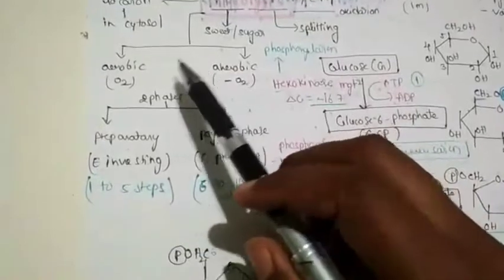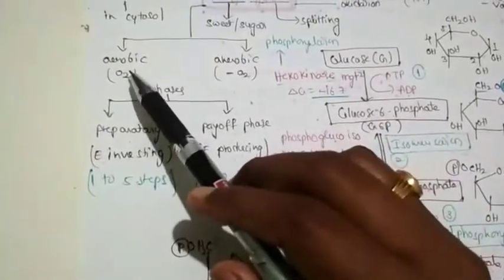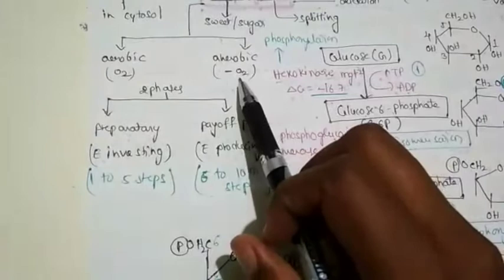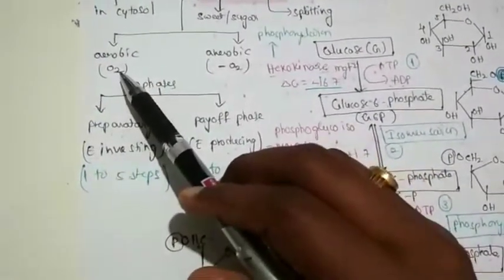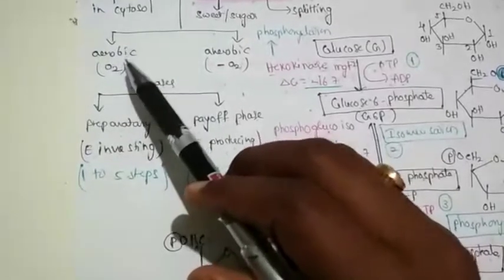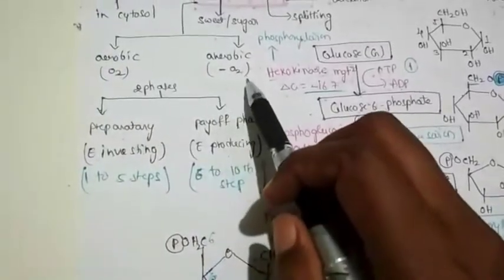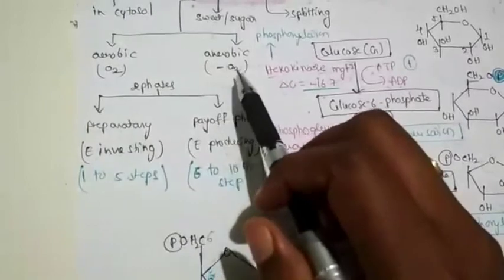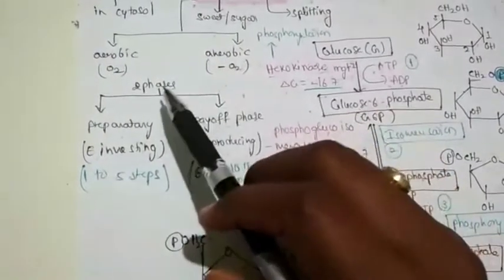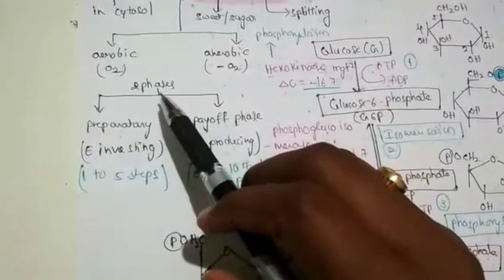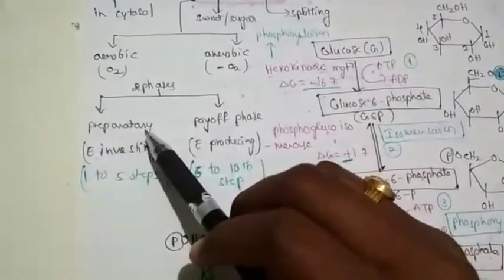Glycolysis takes place in the presence of oxygen or in the absence of oxygen. If glycolysis takes place in the presence of oxygen, it is called aerobic glycolysis. In the absence of oxygen, it is called anaerobic glycolysis. Glycolysis contains mainly two phases: the first one is the preparatory phase and the second one is the payoff phase.